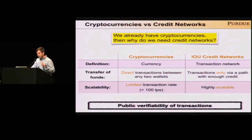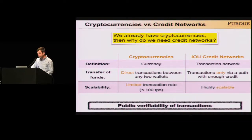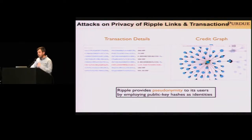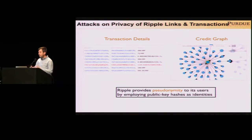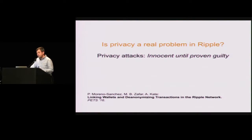Nevertheless, Ripple has adopted the public log idea from bitcoin — called the Ripple ledger — which stores the whole set of transactions and all credit links between users. In this log, users are represented by the hash of their public key, a pseudonym. As you can imagine, it's possible to link together all the transactions performed by a given pseudonym. We know that such pseudonymity leads to only linkable anonymity, which is prone to deanonymization attacks. This has been shown to be a problem in bitcoin, but it has not been shown for Ripple. We wondered: is privacy actually a real problem in Ripple, and can we measure it?